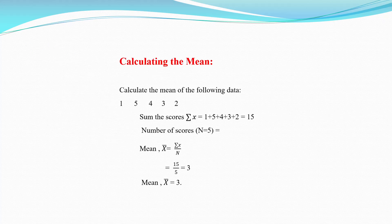How to calculate the mean? Calculate the mean of the following data: 1, 5, 4, 3, 2. Sum of the scores: Σx = 1 + 5 + 4 + 3 + 2 = 15. Number of scores: n = 5. Using the formula x̄ = Σx / n: 15 divided by 5 equals 3. The mean is 3.